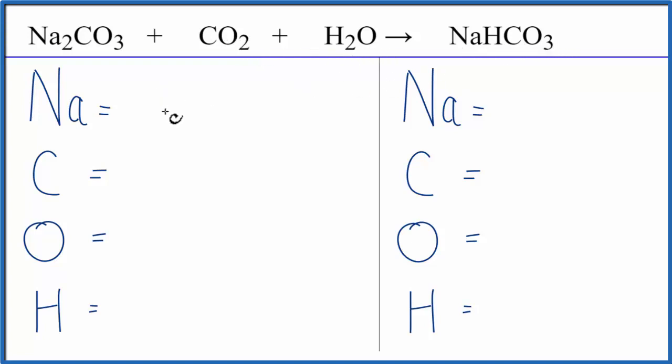Let's add the atoms up on each side of the equation. We have two sodiums, one plus this one here, so we have two carbons. Oxygen, we have three plus the two plus the one here, so we have six of these oxygen atoms, and we have two hydrogens.